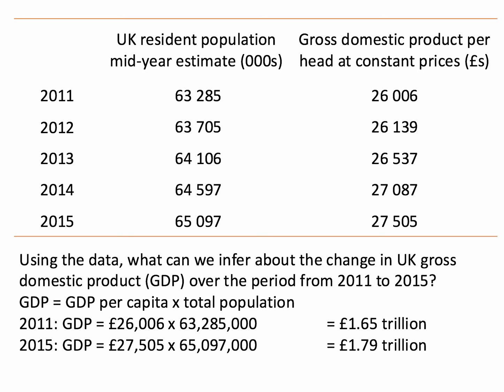That gives us a figure of £1.65 trillion — a trillion of course is a thousand billion. By 2015, GDP had risen; both the population was bigger and per capita incomes were bigger — not massively so — but the population had grown more, and as a result, the total value of UK GDP rose to £1.79 trillion.